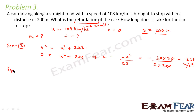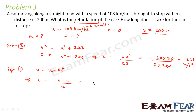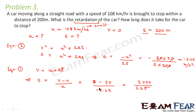Now we use kinematic equation 1, v = u + at, to find the time. From this, t equals (v minus u) divided by a. With v equal to 0, u equal to 30 m/s, and a equal to minus 2.25 m/s², the time comes out to be 13.3 seconds. This is the time taken for the car to stop.